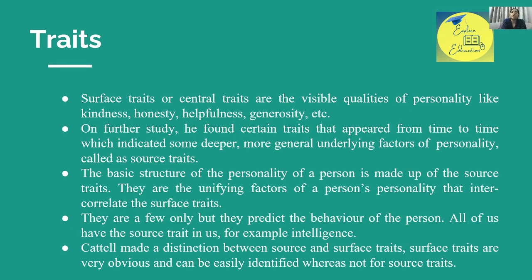Surface traits are the visible qualities of a personality — qualities like kindness, honesty, helpfulness, and generosity that we can see from the outside. On further study, Cattell found certain traits that appeared from time to time, indicating some deeper, more general, underlying factors of personality, which he called source traits. These are not always visible on the surface, and to understand them you need to go deeper.